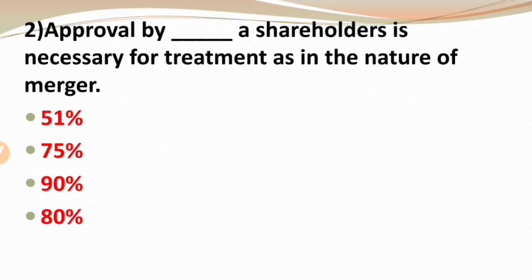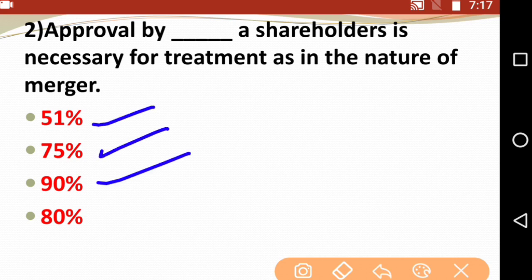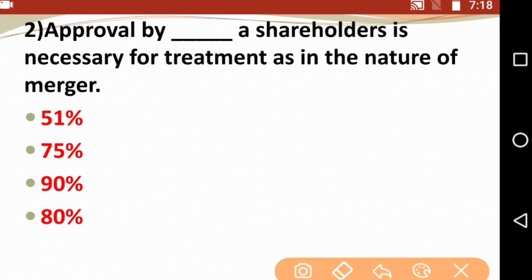Next question: Approval by how many percent shareholders is necessary for treatment as in the nature of merger? Options are 51%, 75%, 90%, and 80%. The right option is 90% — 90% approval of shareholders is needed for treatment as in the nature of merger.